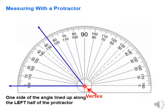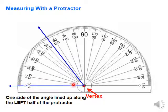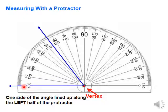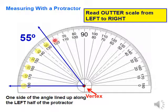Let's take another example. What is the measure of this angle? This angle starts from the left — we don't have a side on the right, so we use the 0 to the left. Starting from the 0 outside and counting, it's between 50 and 60 — it's 55 degrees.